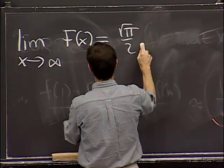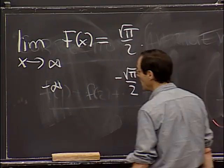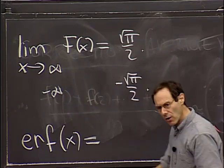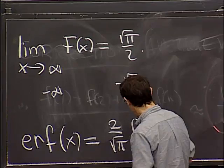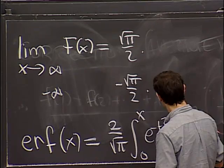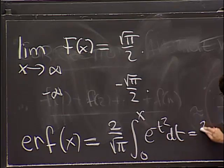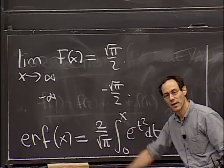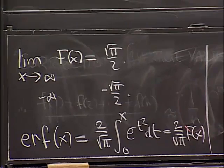The limit as x approaches infinity of f(x) equals the square root of pi over 2, and to minus infinity gives minus square root of pi over 2. For this reason people introduce a new function called the error function, erf, which is 2 over the square root of pi times the integral from 0 to x of e to the minus t squared dt. In other words, it's our previous function multiplied by 2 over the square root of pi, normalized so its limit is 1. This function gets tabulated extensively and is very important.